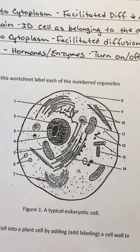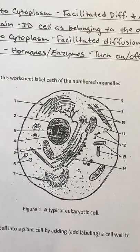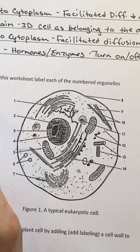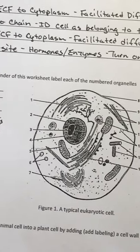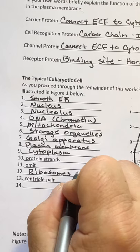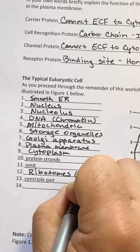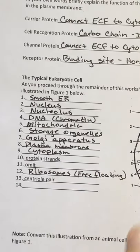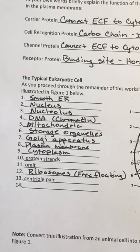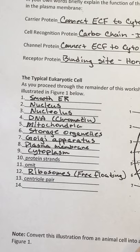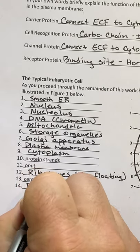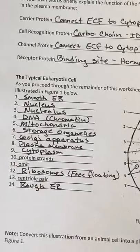Number fourteen is the rough endoplasmic reticulum. Number twelve are ribosomes. If they're loose or out in the cytoplasm, they're called free-floating ribosomes. If they're attached to the rough endoplasmic reticulum, they're just ribosomes associated with the rough ER — and that's number fourteen, the rough endoplasmic reticulum.